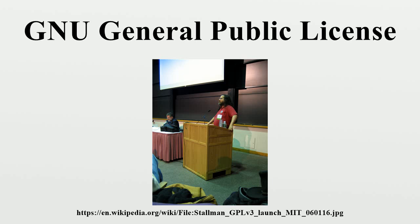According to Richard Stallman, the major change in GPL v2 was the 'liberty or death' clause, as he calls it, Section 7. This section says that if a license imposes restrictions that prevent distributing GPL-covered software in a way that respects other users' freedom, the developer may not distribute it at all. The hope is that this makes it less tempting for companies to use patent threats to require fees from free software developers. By 1990, it was becoming apparent that a less restrictive license would be strategically useful for the C library and for software libraries, when version 2 of the GPL was released in June 1991.